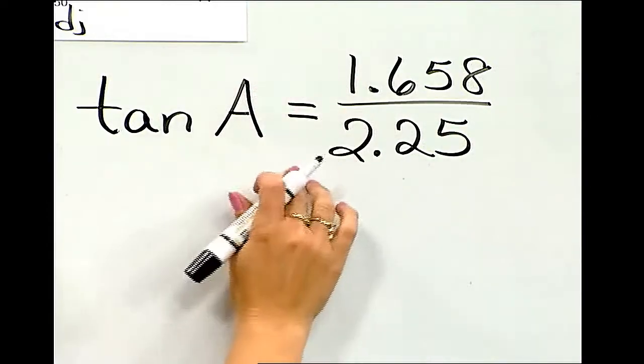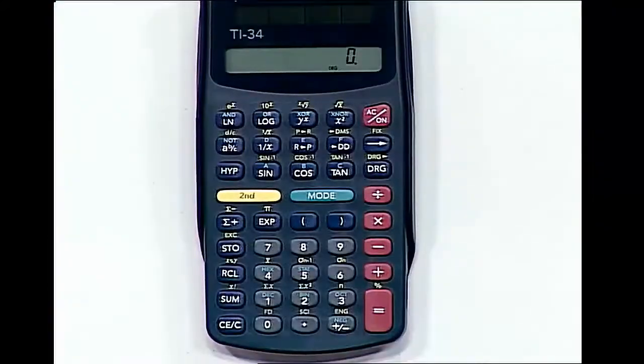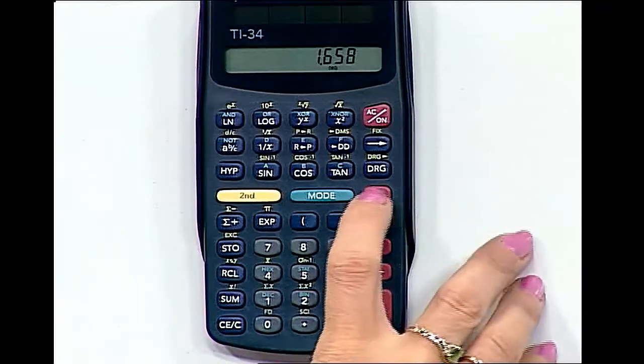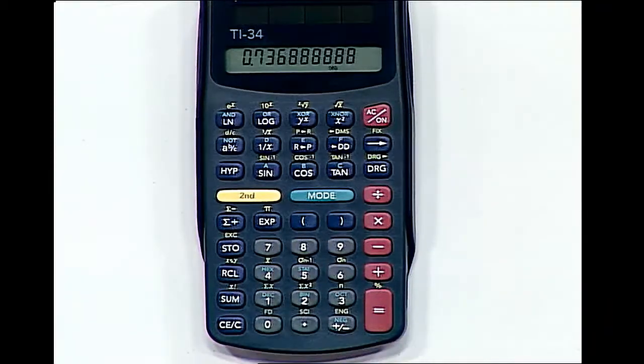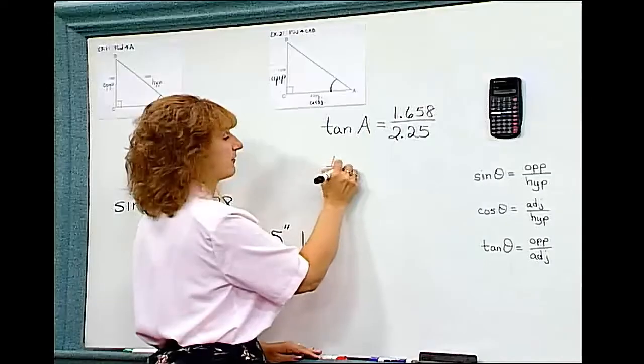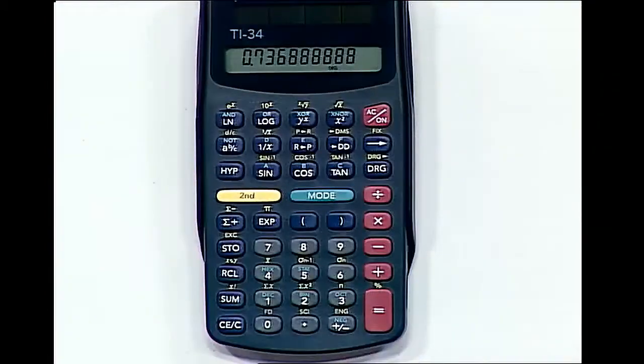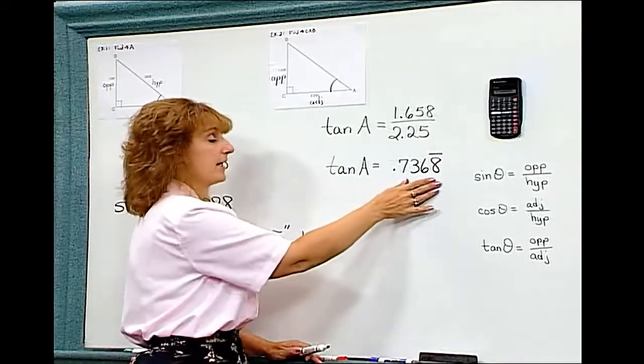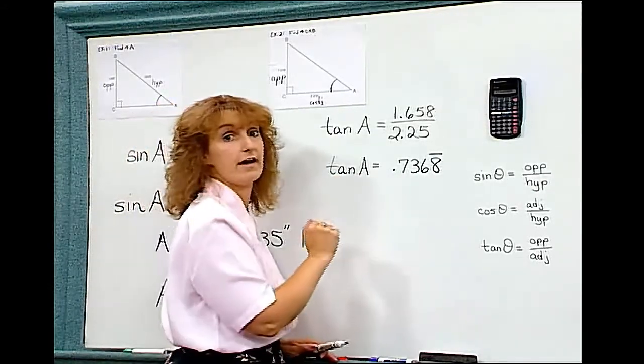Again, I'm going to divide. I'm going to clear my calculator first. Put in 1.658 divided by 2.25, and I get an answer for the tangent of A of 0.7368 and that 8 repeats. But that's not my answer. I need to use the second tangent button in order to find angle A.